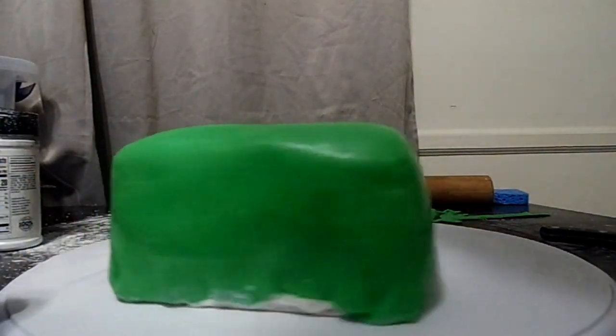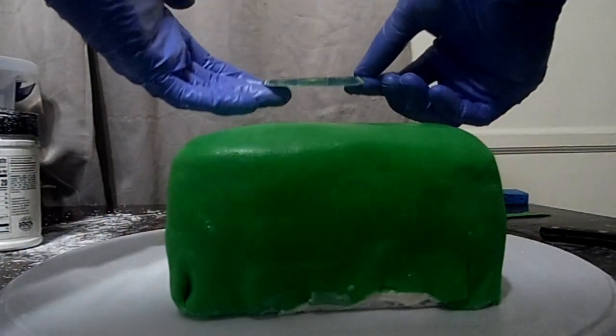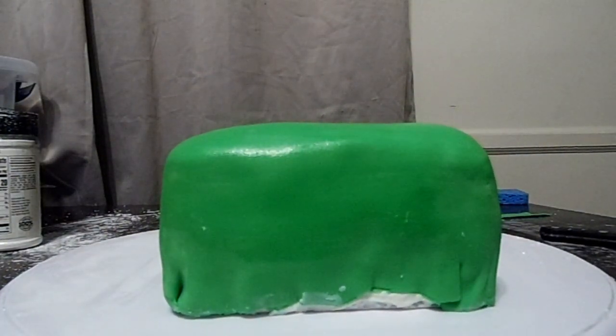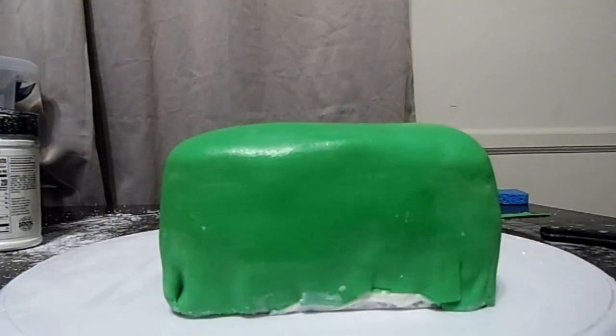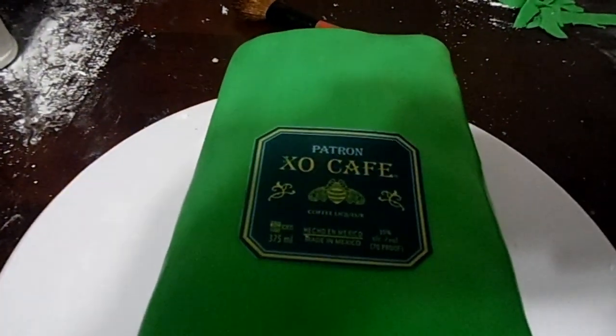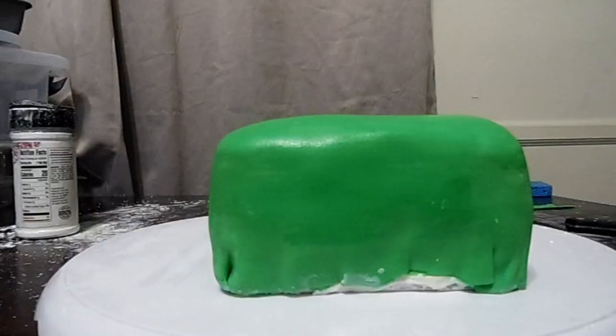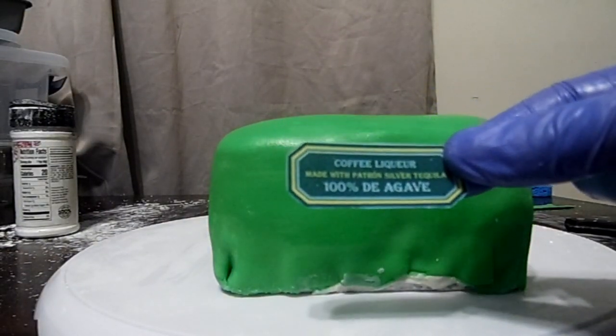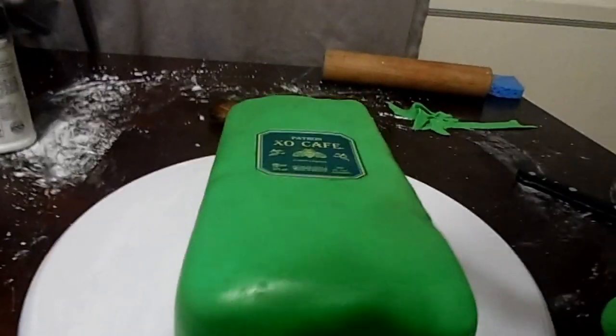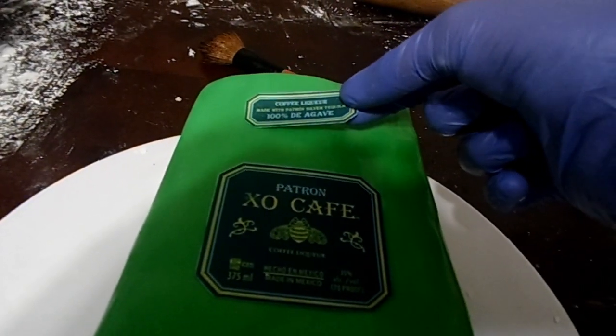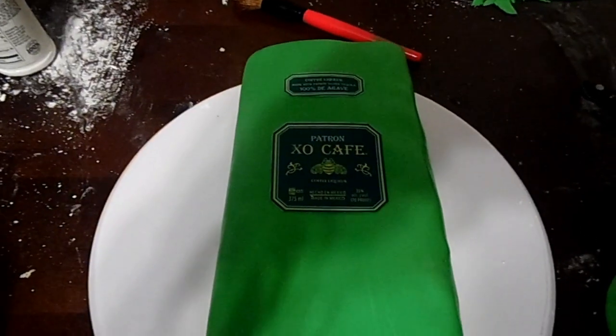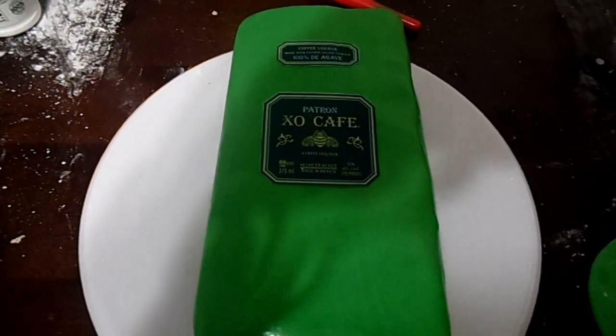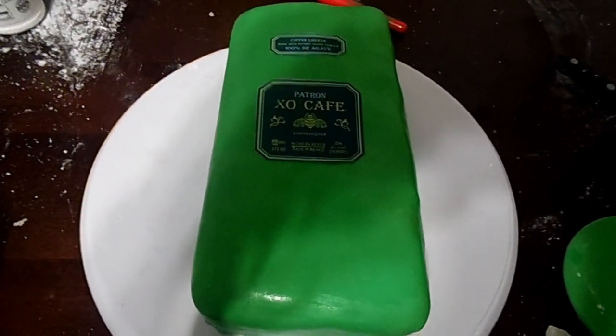So I have my edible image here and that's the actual label that's on the box. To place the label on you can use just a dab of water, but for the edible images I really recommend you use just a little bit of corn syrup. Corn syrup will act as like a piping gel, act as the glue. So I just put corn syrup along the edges of the label only. I don't put corn syrup in the middle and all over the back because too much, you know, the edible image will get soggy and it will break. It will actually fade the image as well.